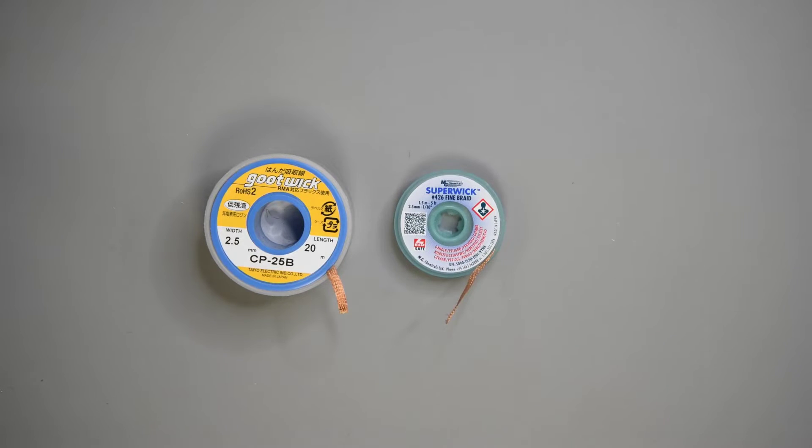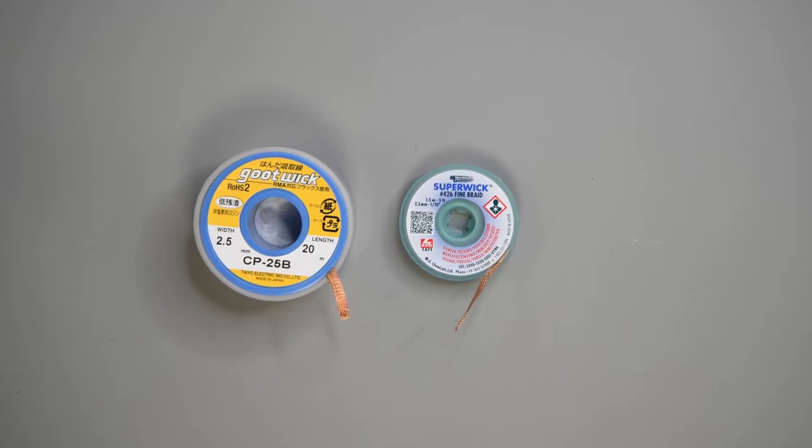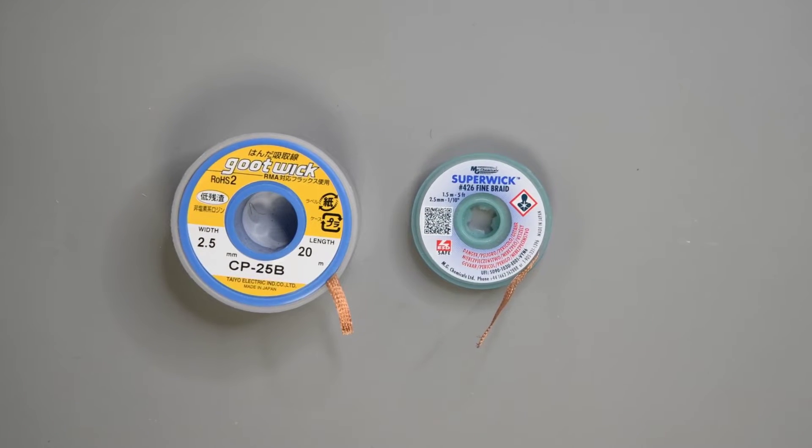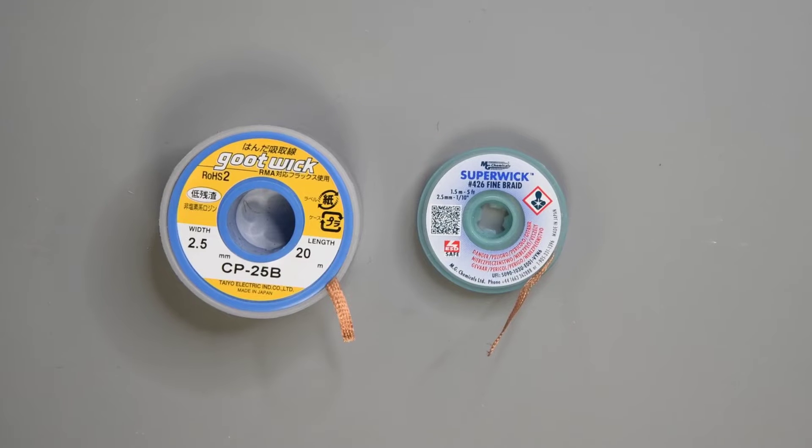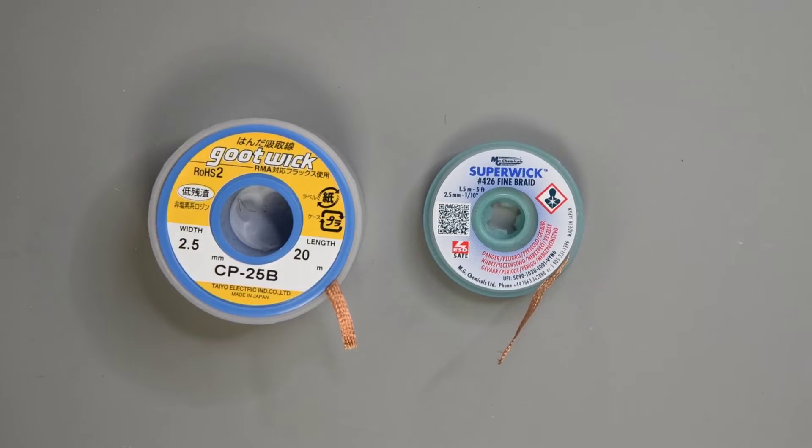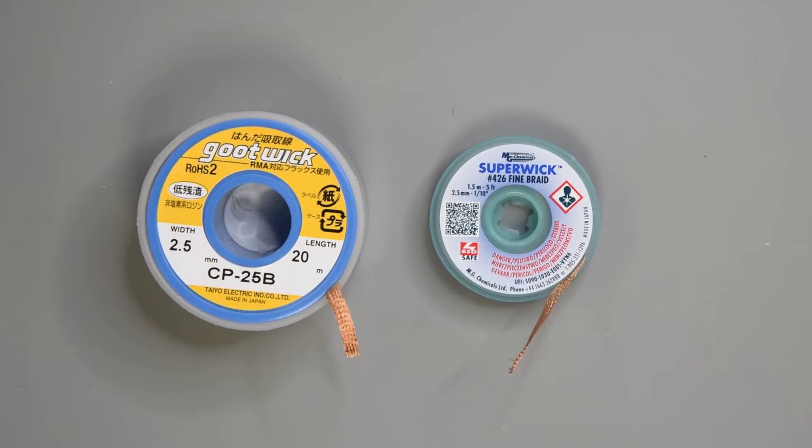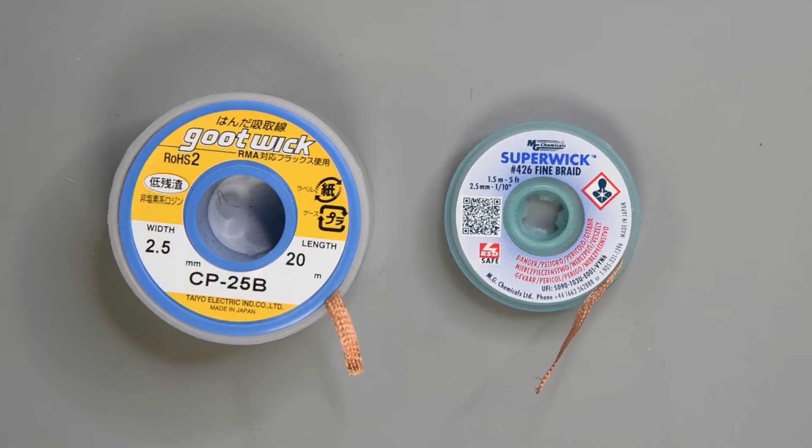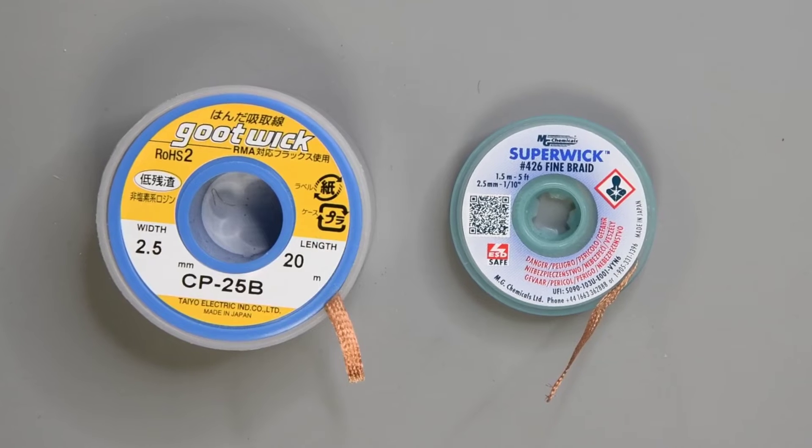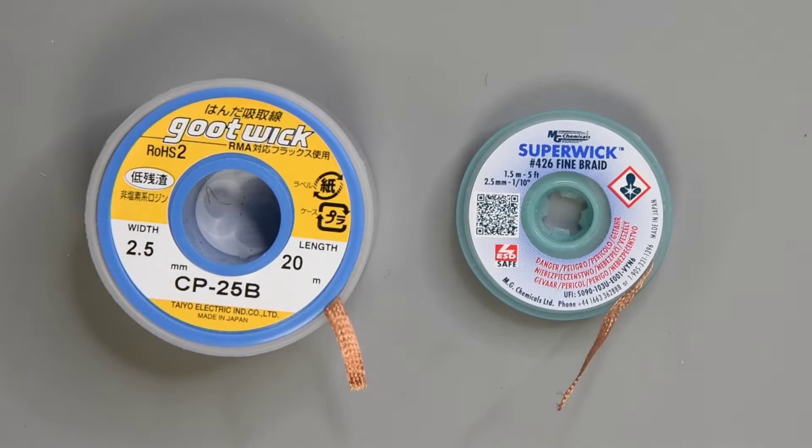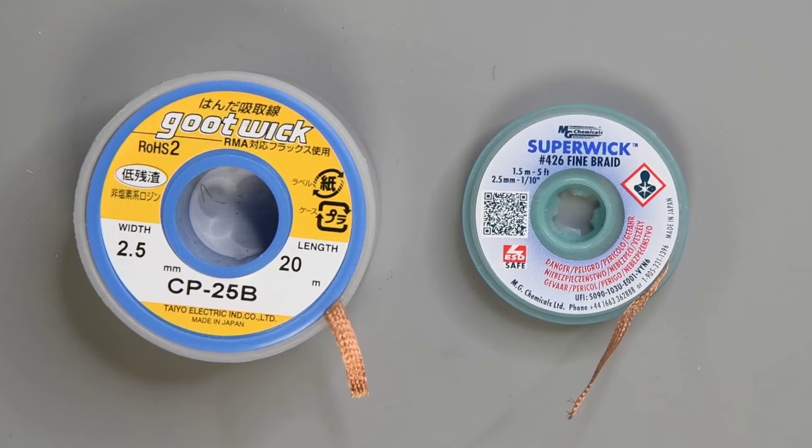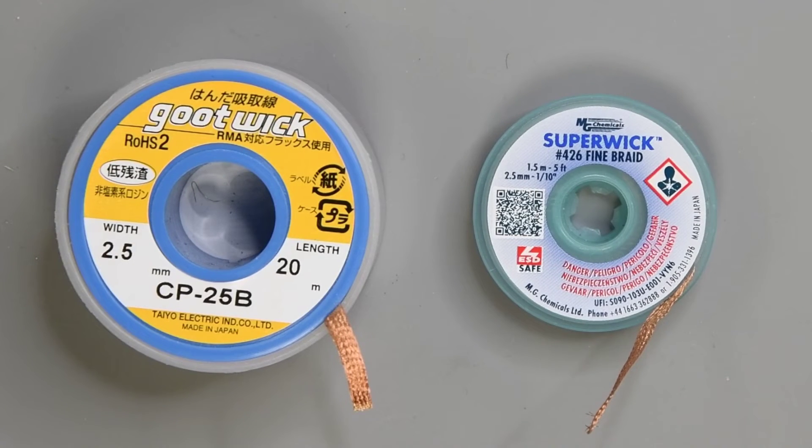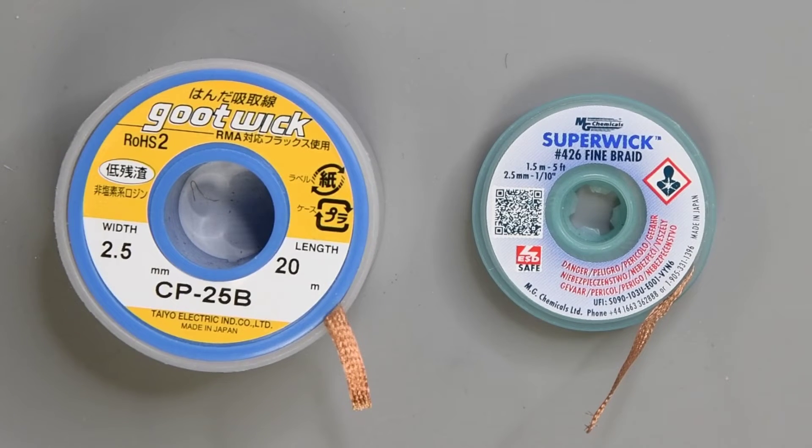I used a couple of different solder wicks for this. My favorite is the GOOT wick - that's G-O-O-T-W-I-C-K. But it seems you have to order a large roll to get a good price on it. So unless you plan on using a lot of solder wick, probably not worth it. The other wick I used is the MG Chemicals 426. And I found it to work very well. And can get a 5 foot roll from Amazon for less than $4. So it's not expensive and easy to get. Not worth saving a dollar or two to cut corners here. A good working solder wick is worth its price. Go with the good stuff here.